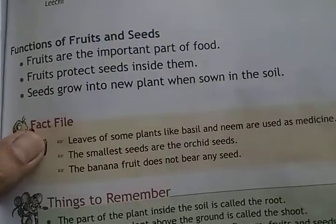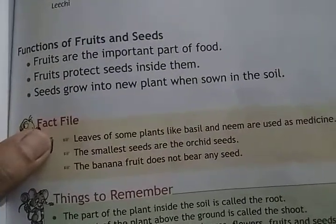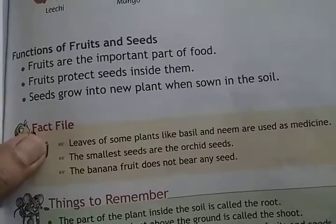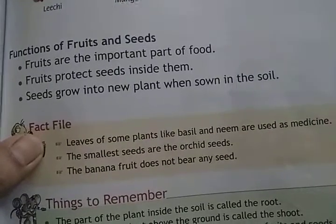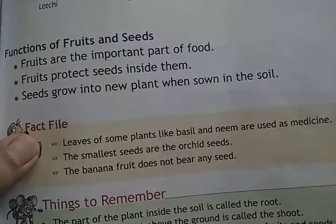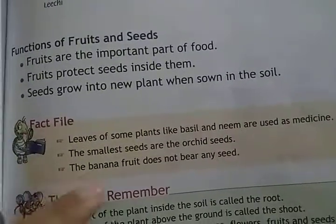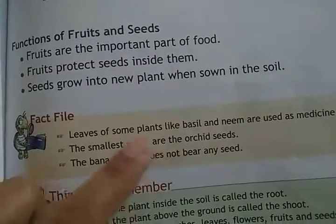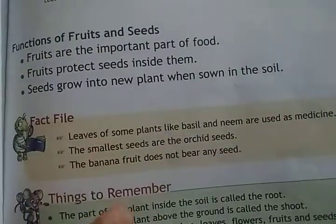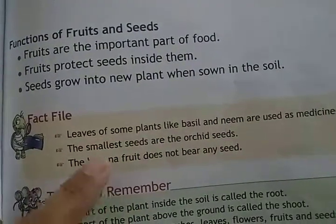In fact, some plants like basil and neem, we use their seeds. The most small seed is the orchid seed — the orchid flower has the smallest seed.